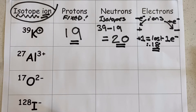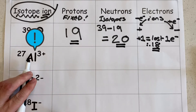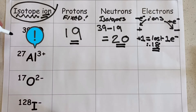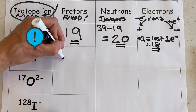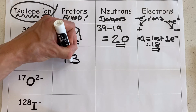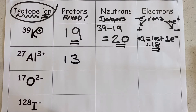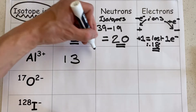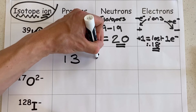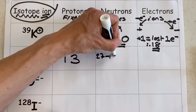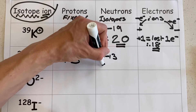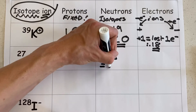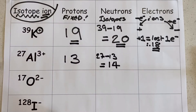Let's do a similar analysis now of this ion of an aluminium isotope. Using the periodic table, we know that aluminium has always got 13 protons. And using the mass number of 27, subtract from it the value of 13, we can determine the number of neutrons, which is 14 for this particular isotope of aluminium.